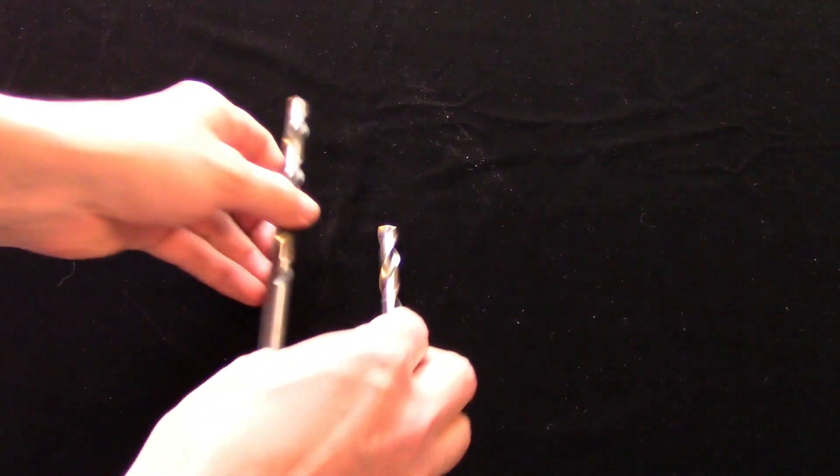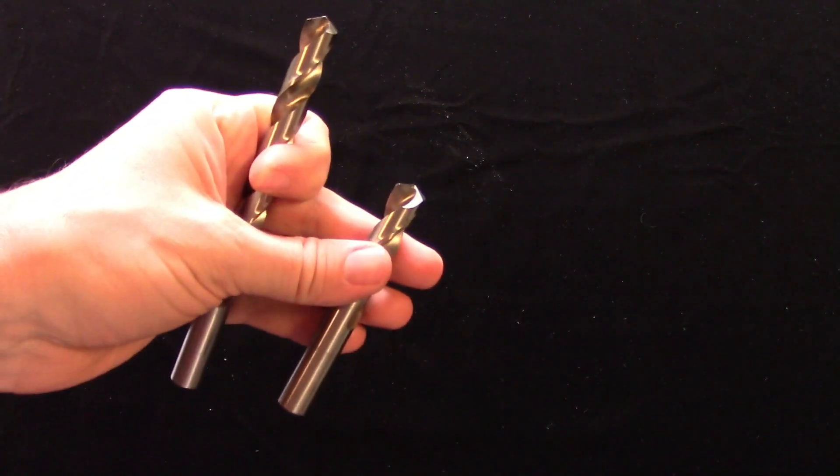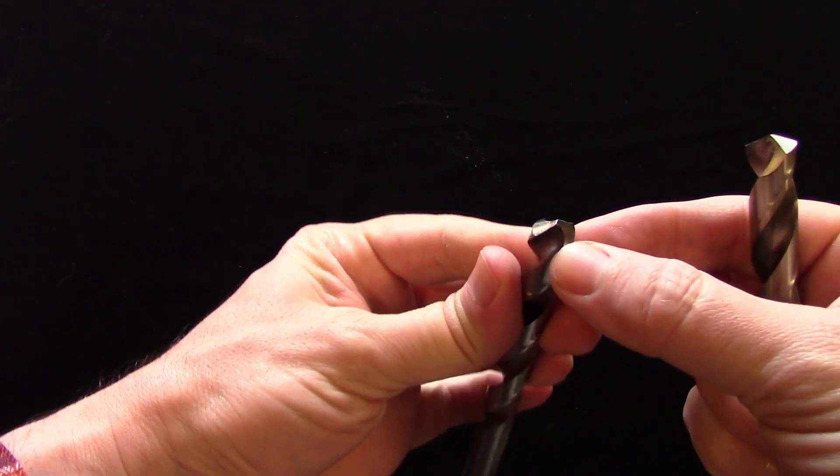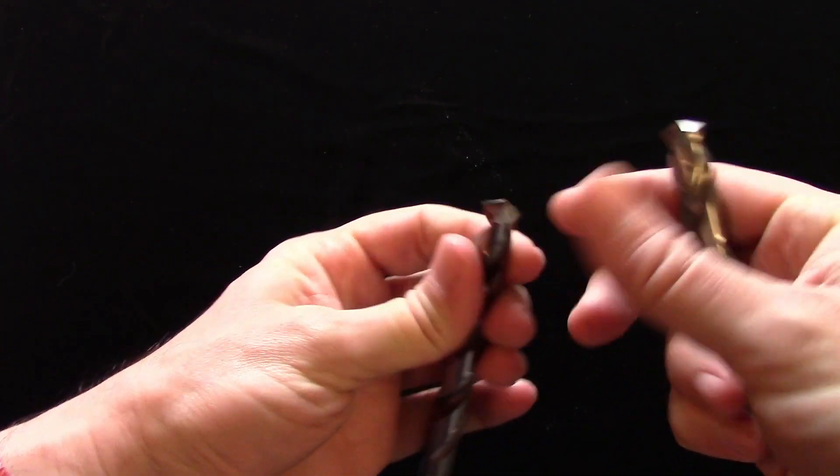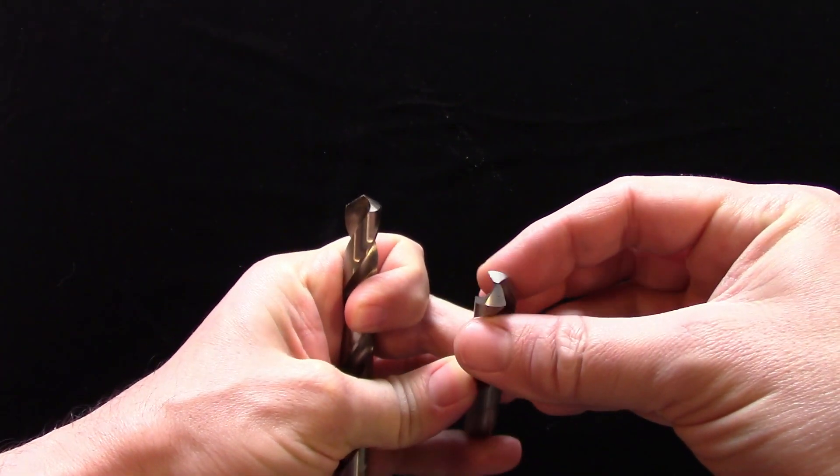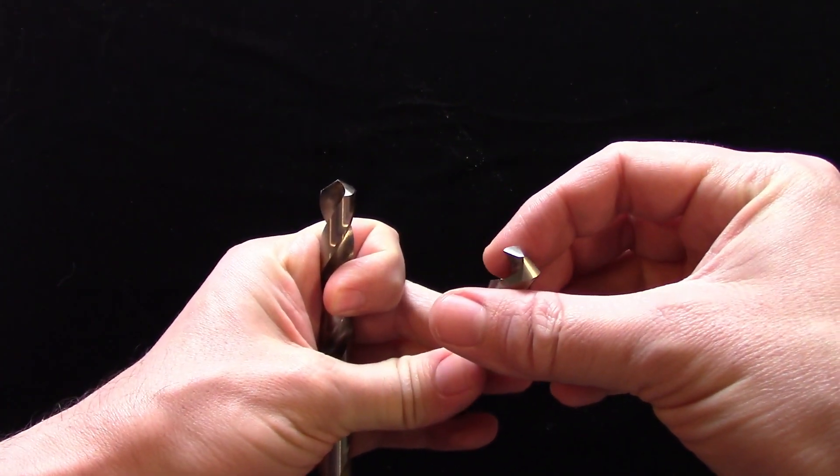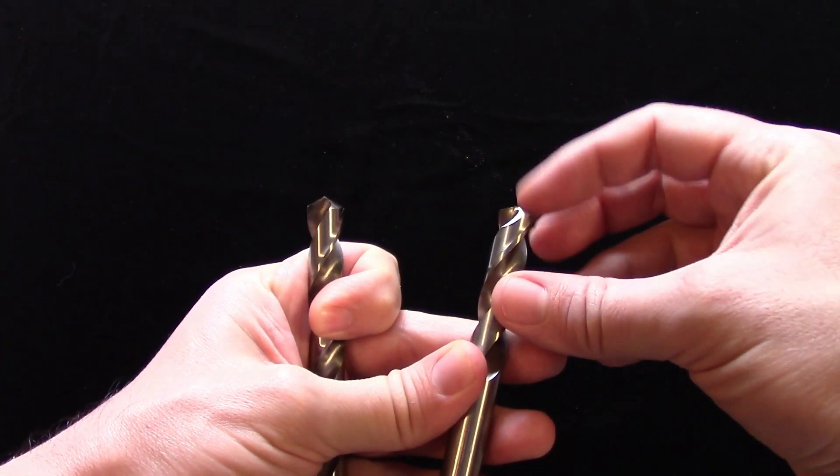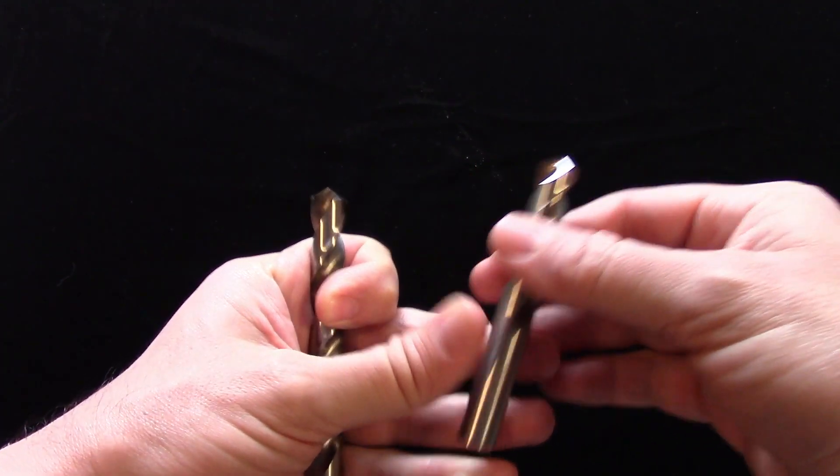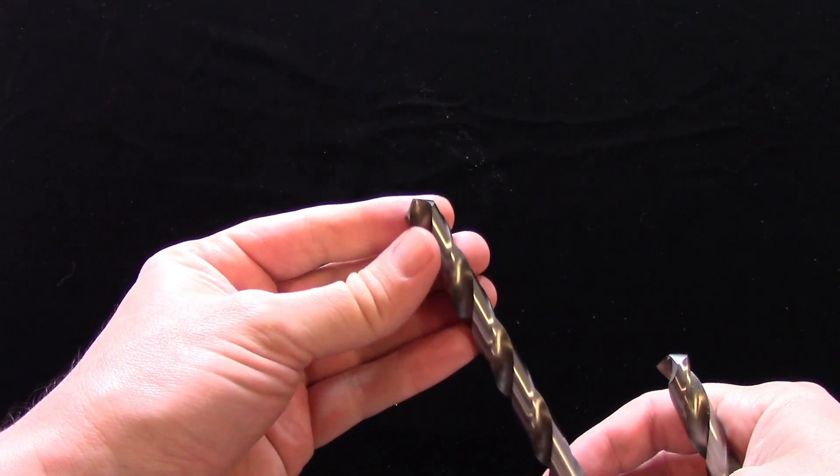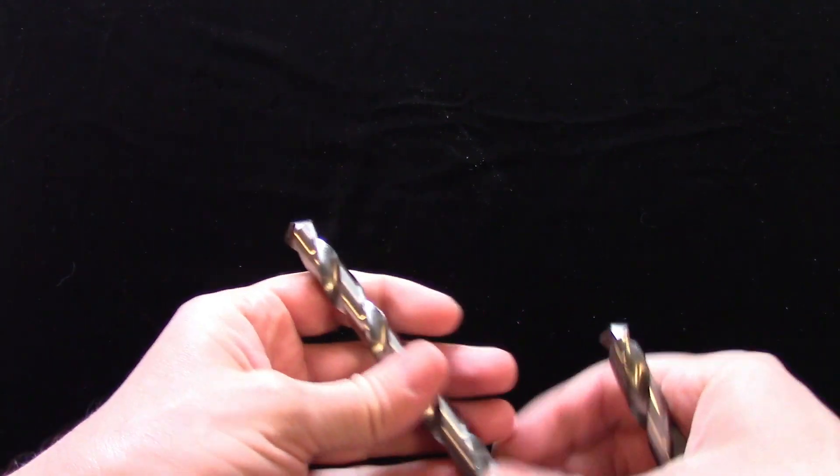There are also many different tip grinds available for twist drills, but by far the most common are the 118 degree chisel point, like this one, and the 135 degree split point. The degrees refer to the angle formed by the two cutting edges of the drill. While the 118 degree is a little more common, both types are generally available at industrial suppliers as well as hardware stores and home centers.